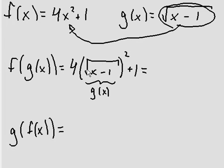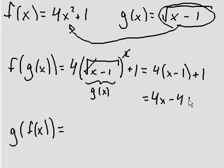So in this case the root cancels with the squared and I have 4 bracket x minus 1 plus 1. So this will become 4x minus 4 plus 1, which is 4x minus 3. That's it. This is f of g of x.